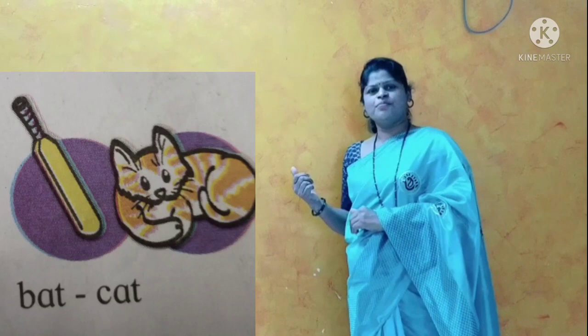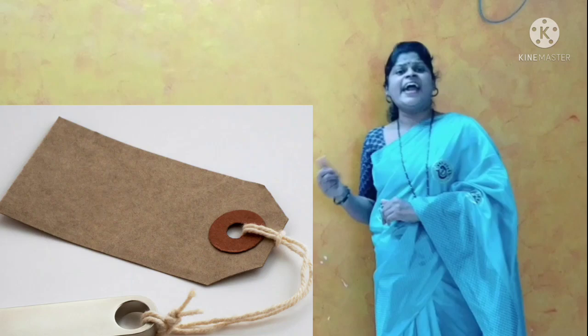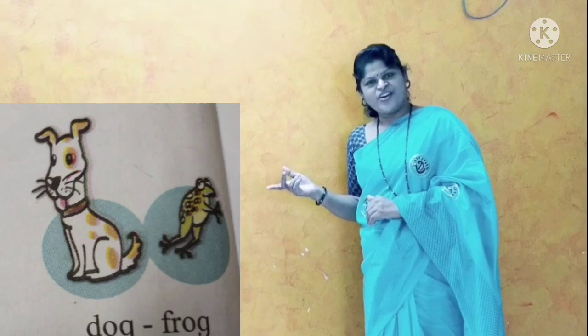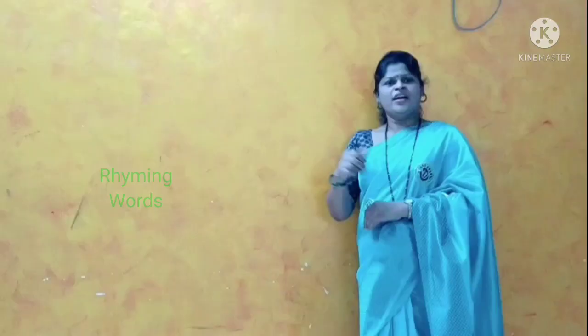Now let's identify the rhyming pairs. Bat — Cat. Bat, Cat, Bag, Tag. Tap — Clap. Table — Cable. Ball — Doll. Dog — Frog. Understood? It is called rhyming words.